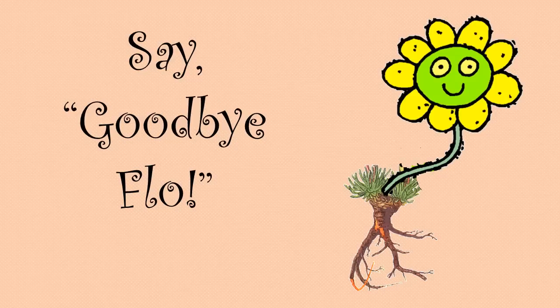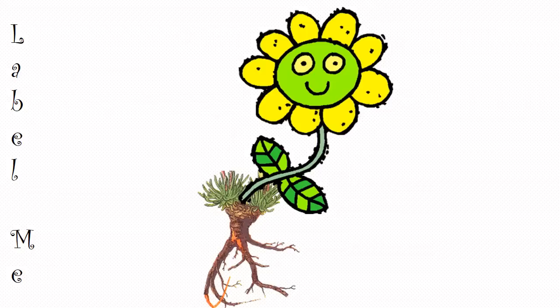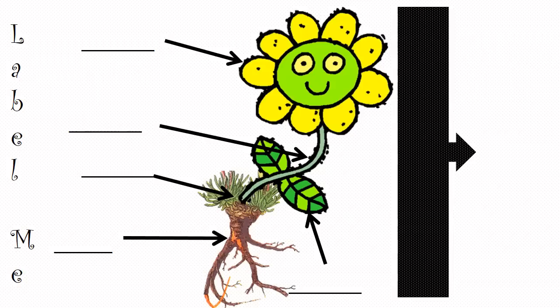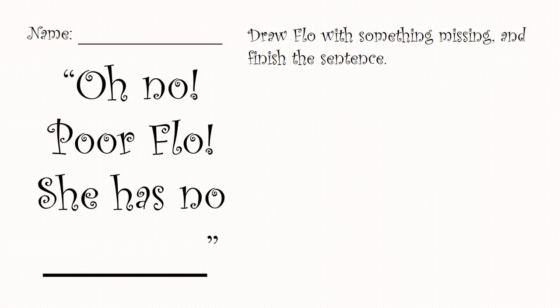Say, Goodbye Flo. If you'd like, you can get your teacher or another adult to print out a picture of Flo and label her to practice on your own. See if you can remember all the parts Flo has. Another activity is to make your own picture of Flo. Make sure she is missing something and then finish the sentence. Enjoy!